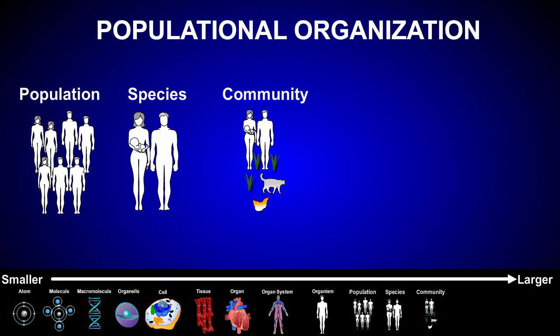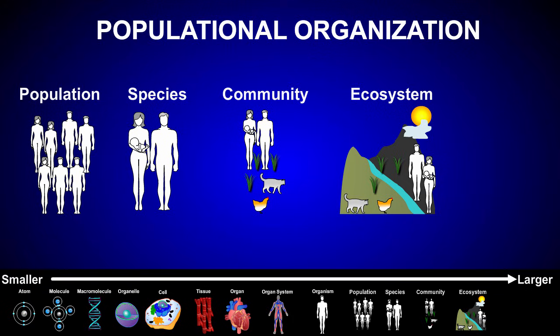When communities interact with parts of the non-living environment, like water, gases, soil, and climate, they form what's referred to as an ecosystem.